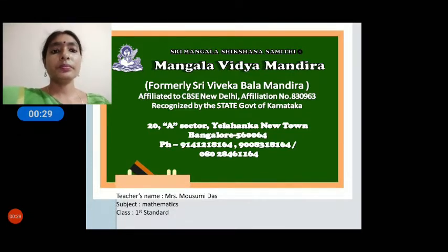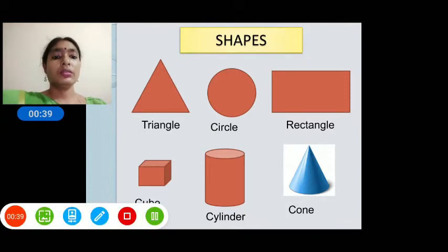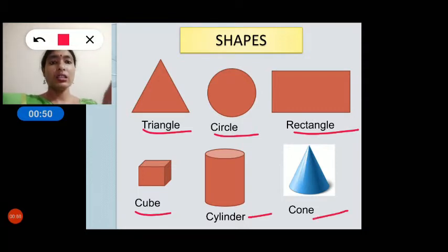Today we are going to learn about shapes. There are so many shapes here — you can see the picture. The first one is triangle, then circle, rectangle, cube, cylinder, cone, and there are many other shapes as well.